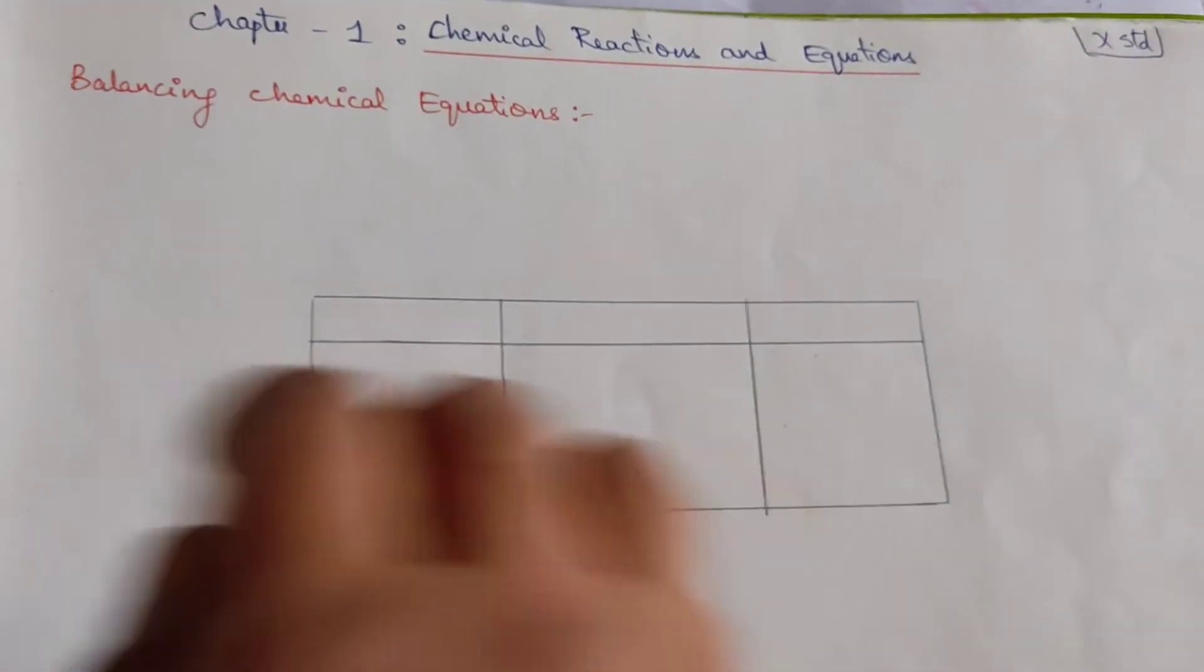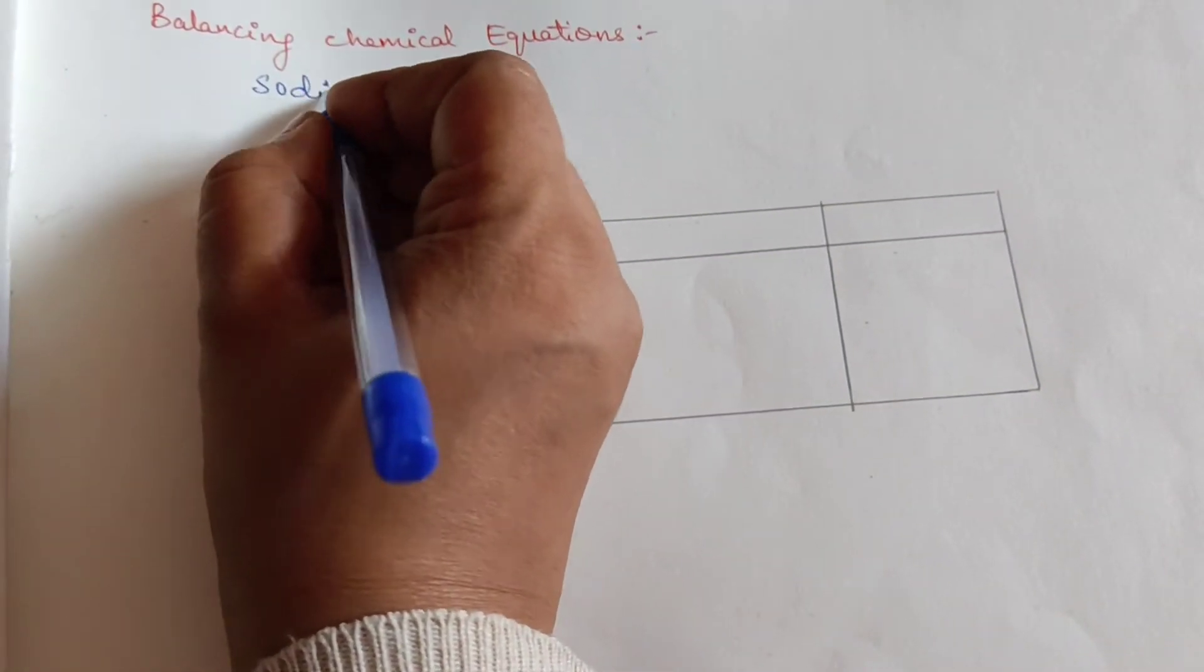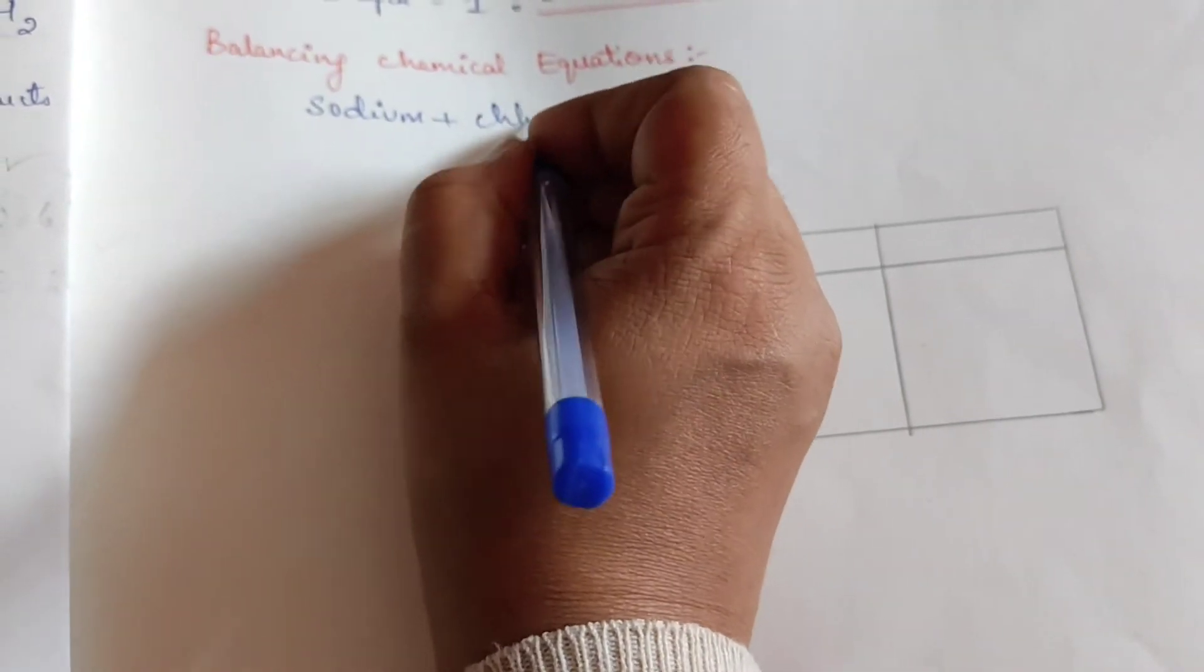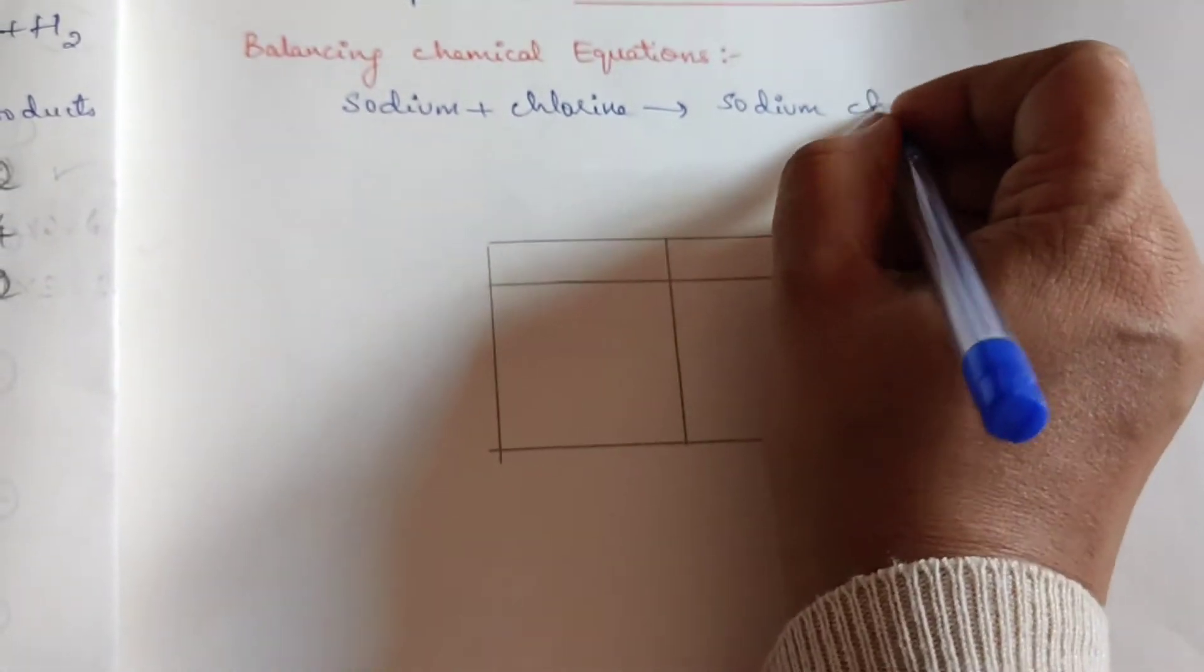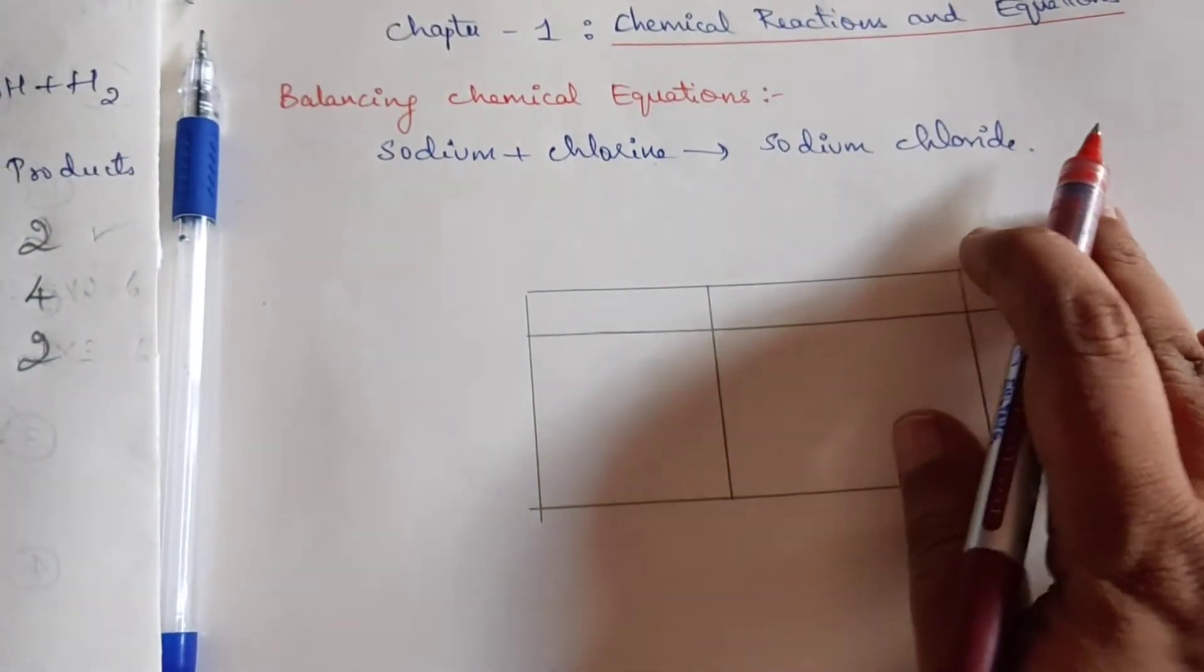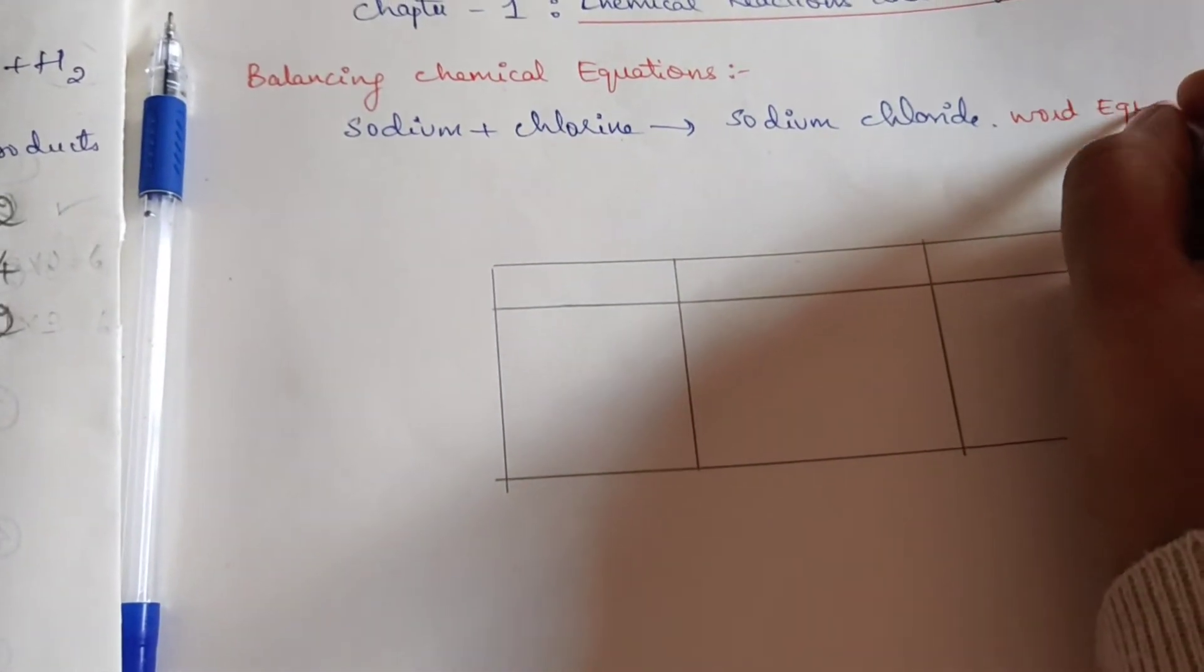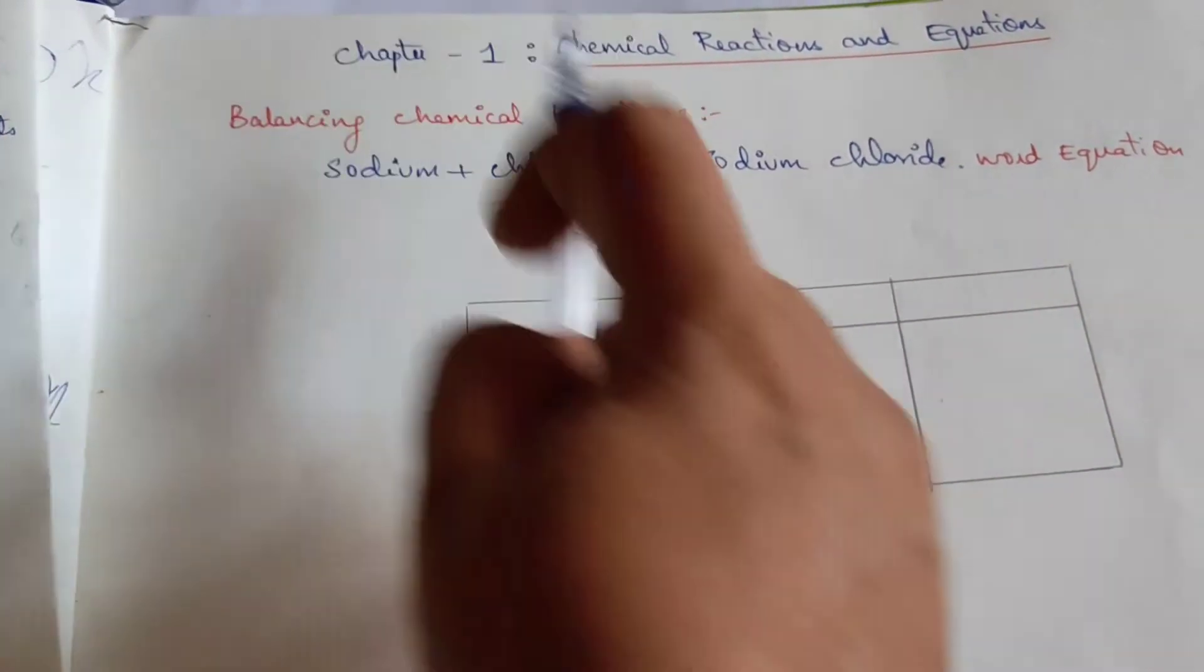So if there is an equation, sodium reacts with chlorine to give sodium chloride. First of all, you should know this is a word equation. Now we will convert this into a chemical equation.